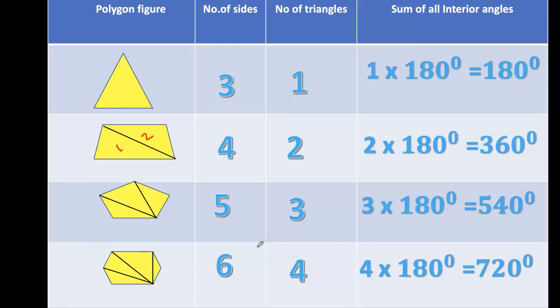When we observe: three number of sides, one triangle. Four number of sides, two triangles. Five sides, three triangles. Six sides, four triangles. Let's see the relation: three minus two equals one. Quadrilateral: four minus two equals two. Pentagon: five minus two equals three. Hexagon: six minus two equals four.